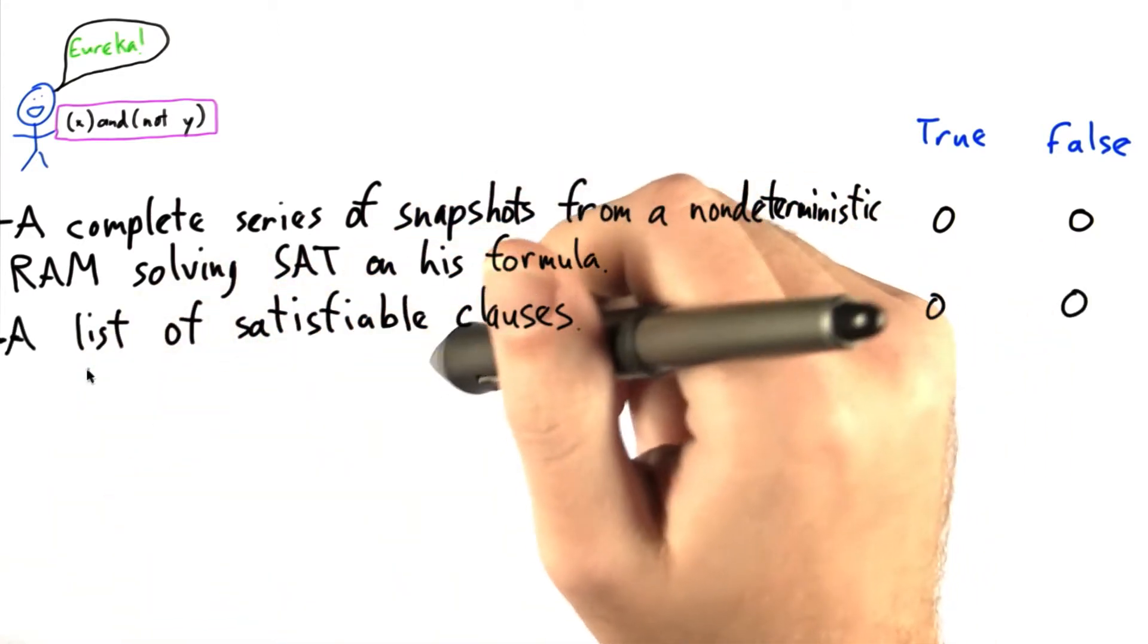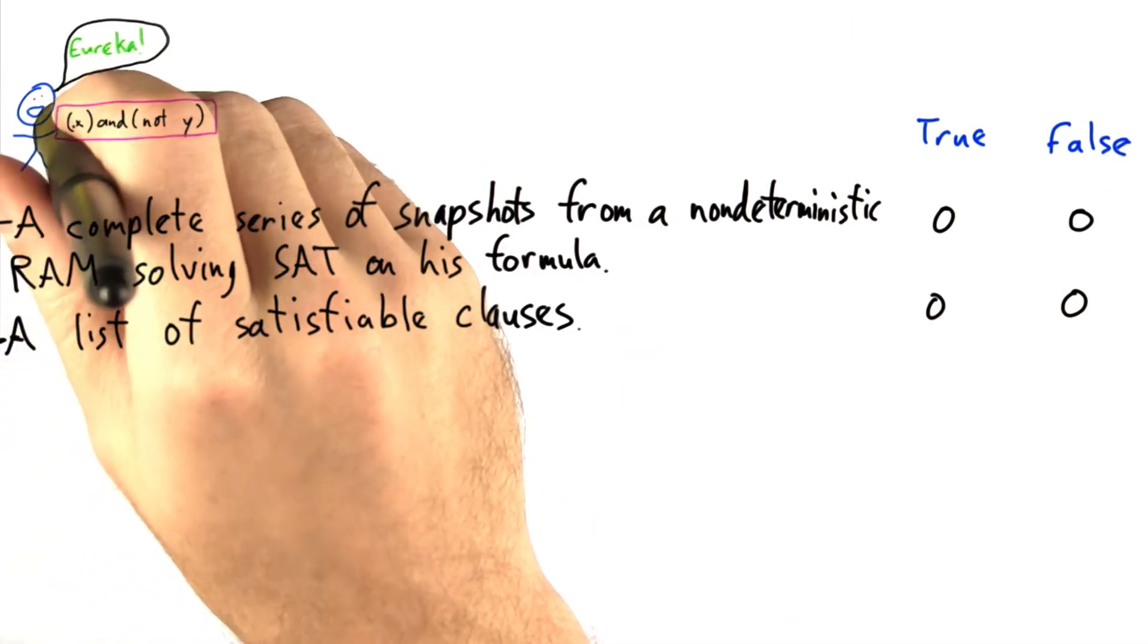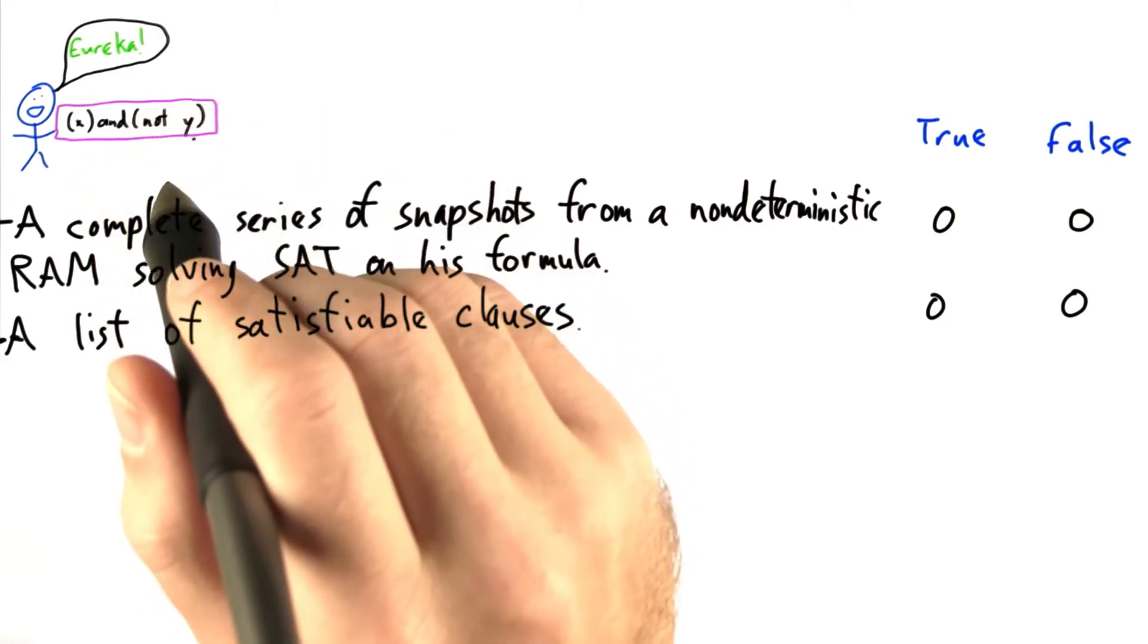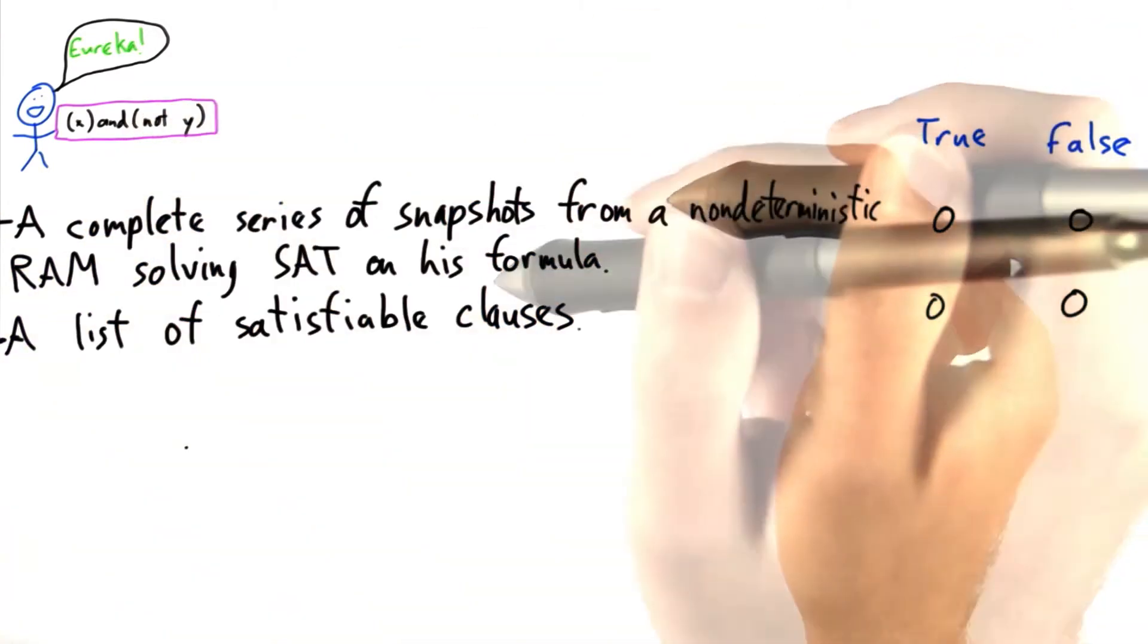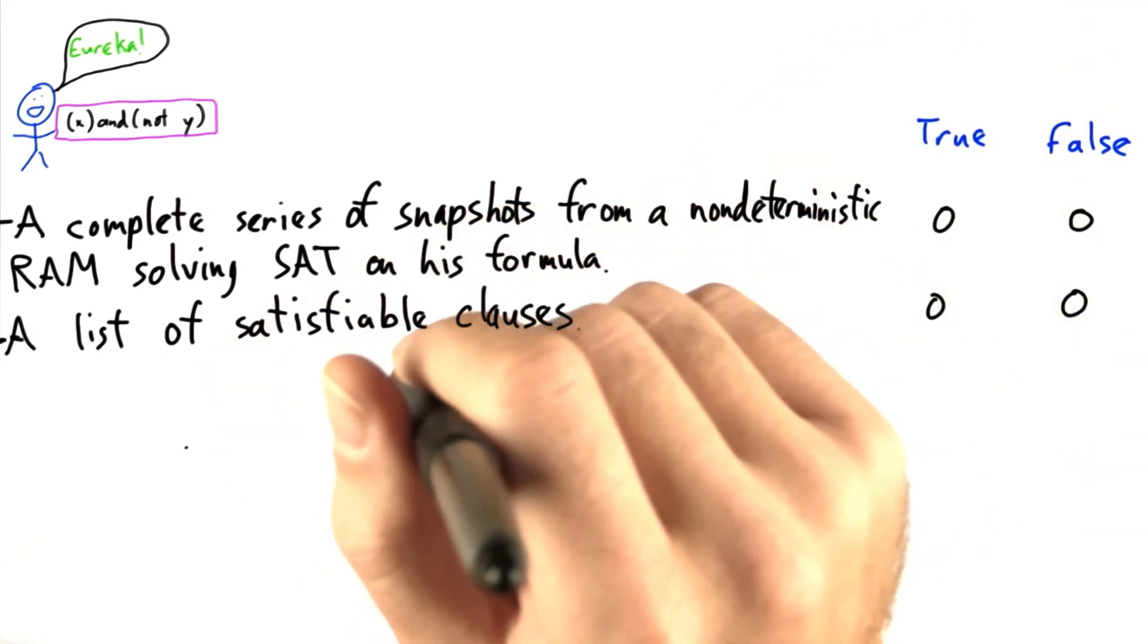How about if he had a list of satisfiable clauses? For example, he had a list that had X as a satisfiable clause and not Y as a satisfiable clause. Then, for the entire Boolean formula, could we then determine whether it was satisfiable or not?